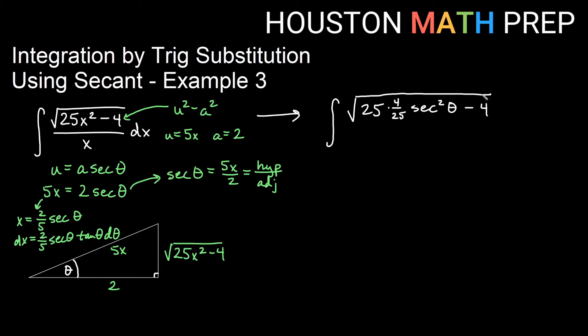So you notice the 25 is being really replaced by a 4 so that it matches that 4 and we get a nice multiple of a Pythagorean identity. x just goes on the bottom so that's 2 fifths secant of theta on the bottom. And then d theta out back we're going to go ahead and write 2 fifths secant theta tan theta d theta.